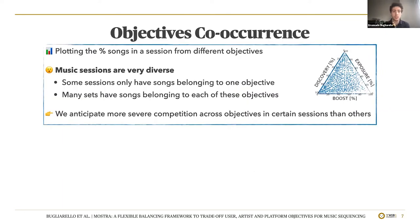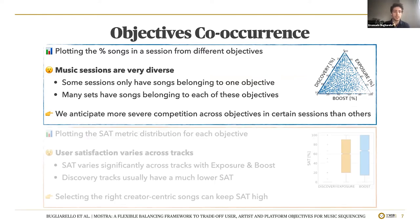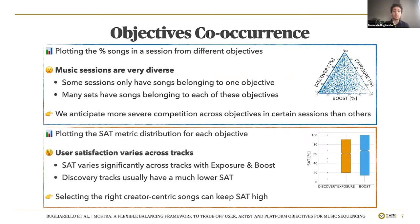Next, we try to understand the diversity of objectives within sessions by plotting the percentage of songs from each objective. The ternary plot on the right shows that music sessions are indeed very diverse — some consist only of songs from a single objective, while others have songs from all three objectives, meaning competition varies across sessions. When we plot the distribution of SAT scores for songs labeled with a given objective, satisfaction varies considerably for exposure and boost, but is usually much lower for discovery. Nevertheless, discovery tracks can still lead to high SAT, so if we choose correctly, creator-centric songs can keep satisfaction high while also maximizing other objectives.